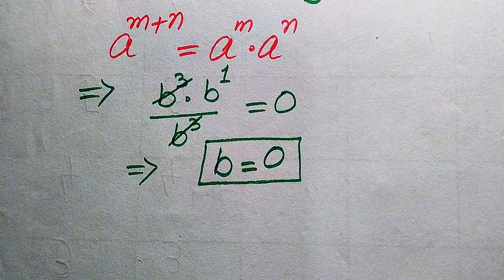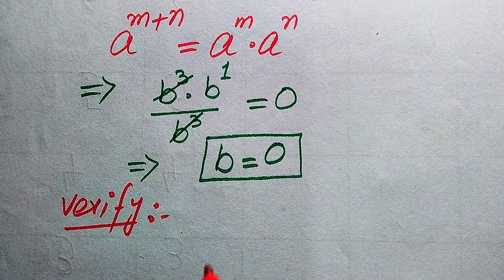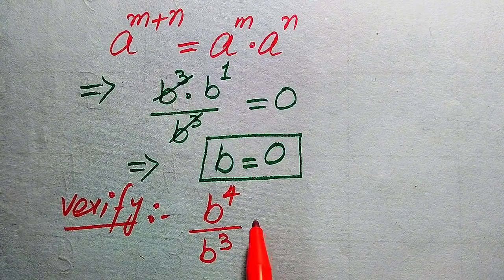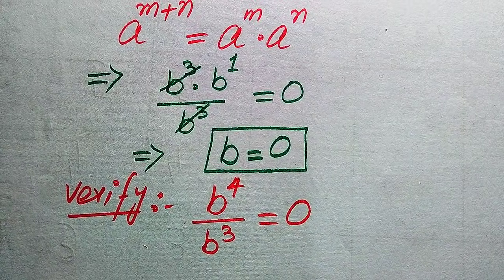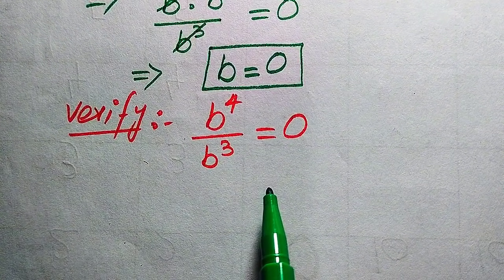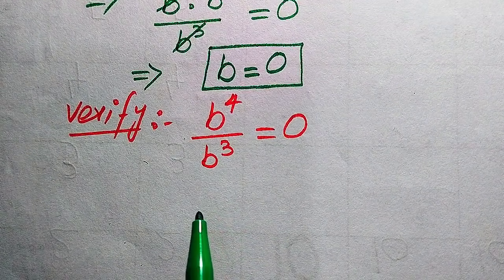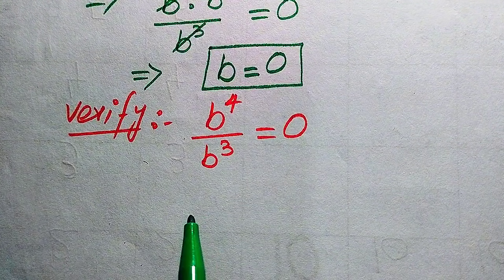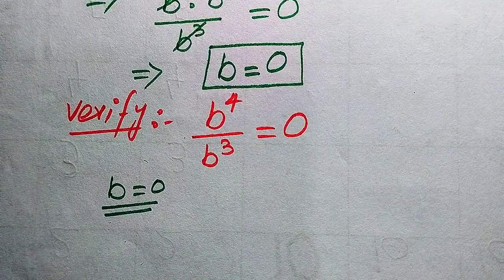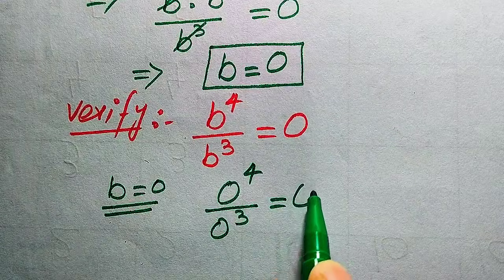Now we verify whether b equals 0 satisfies the given equation. The roots that satisfy the equation are called solutions, and the roots that do not satisfy it are called extraneous roots. To check, we substitute b equals 0 into the left hand side, giving us 0 to the power of 4 divided by 0 cubed equals 0.